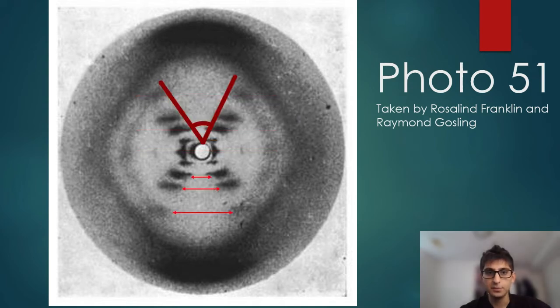The distance between the dashes, as well as the angle of the X, helped identify the radius of the DNA helix to be 10 angstroms, and therefore the diameter to be 20 angstroms.